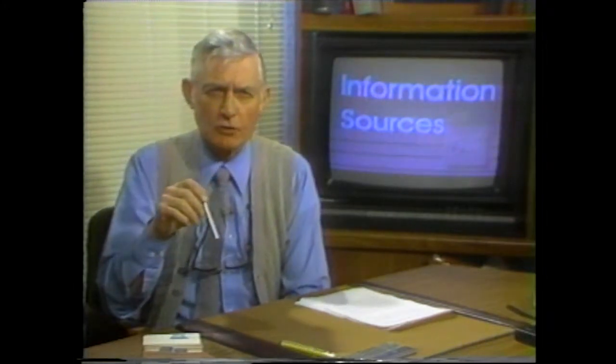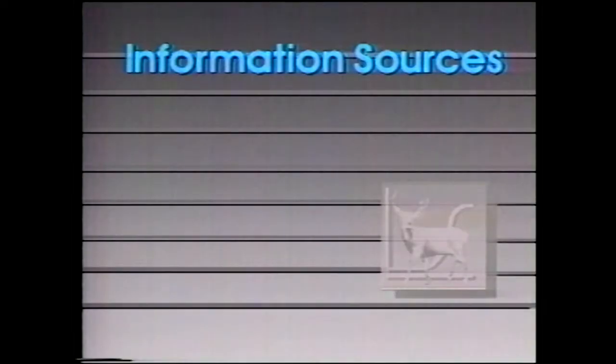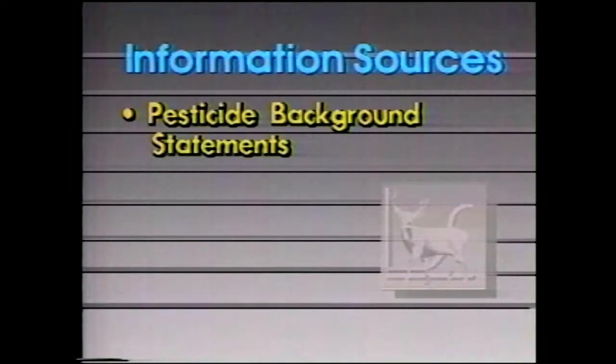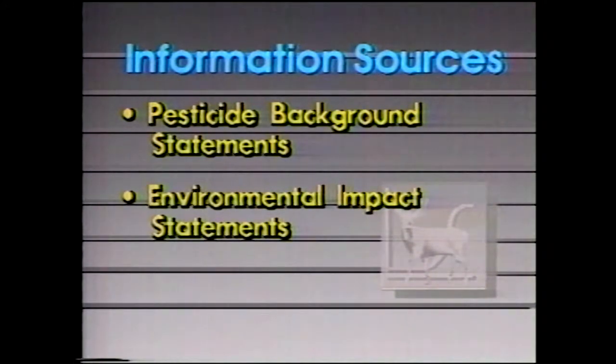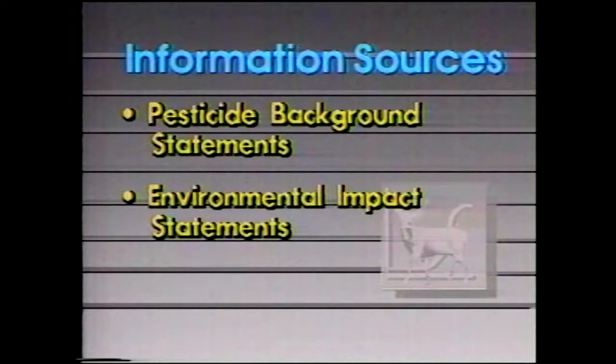Information on the potential environmental effects of various pesticides is available to the pesticide user. The best immediate sources of data are the pesticide background statements prepared for the Forest Service, as well as environmental impact statements, which contain reviews of the scientific literature and the testing done by the manufacturers of the pesticide. There are a variety of other references listed in the material accompanying this program.